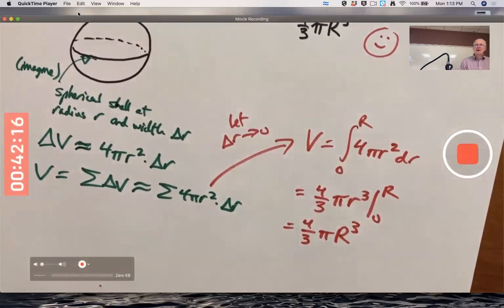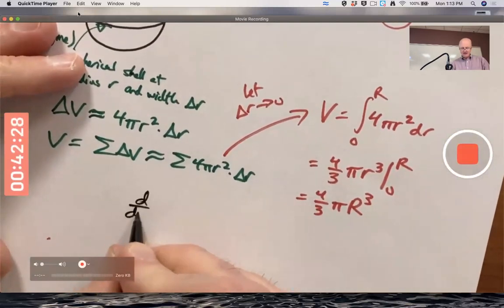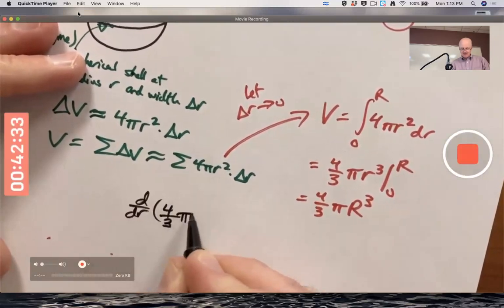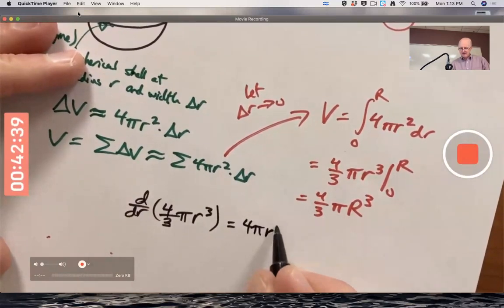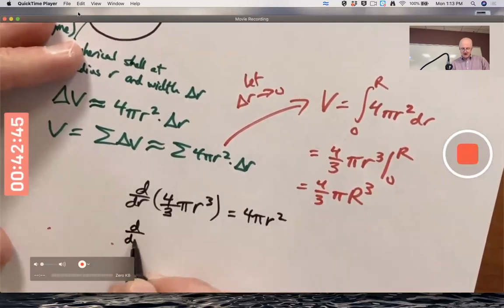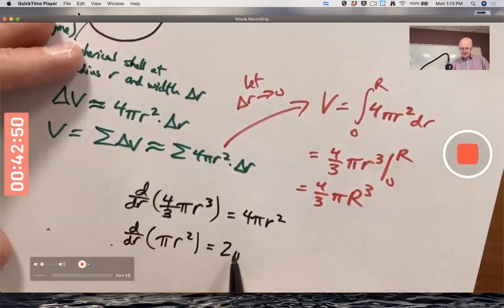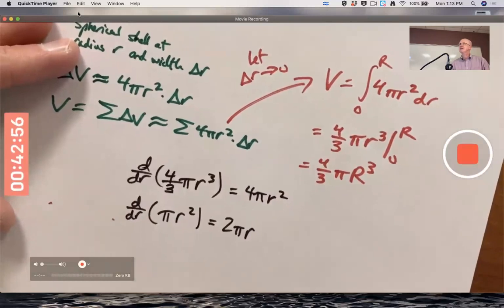Something interesting to think about in both of these examples. Let me go back to this using little r's. The derivative with respect to little r of the volume is the surface area. And the derivative with respect to r of the area of a circle is its circumference.